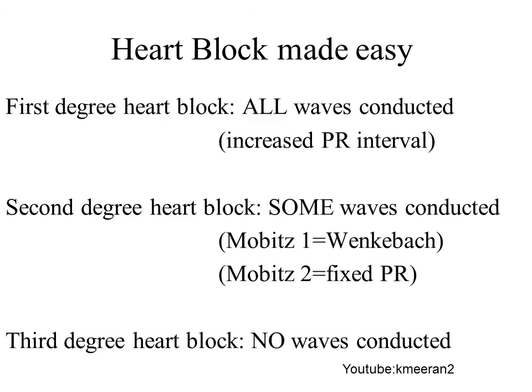In summary: in first degree heart block all the waves are conducted with an increased PR interval. In second degree heart block some of the waves are conducted and some aren't. In third degree heart block, or complete heart block, no waves are conducted at all. Third degree heart block is the time when you will see cannon waves in the JVP.